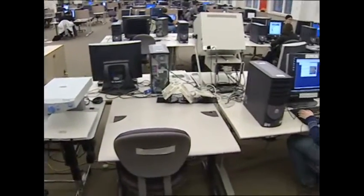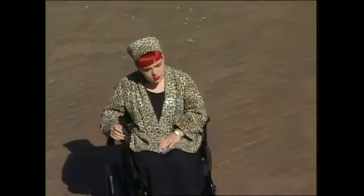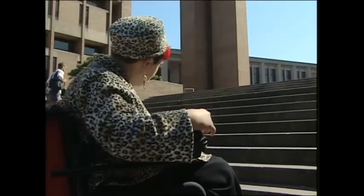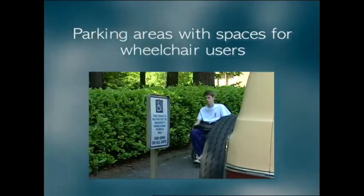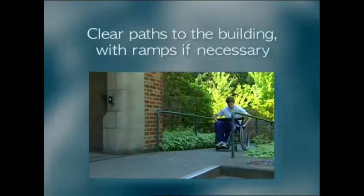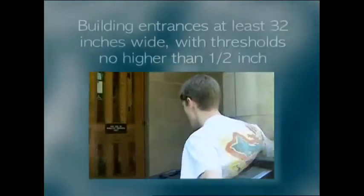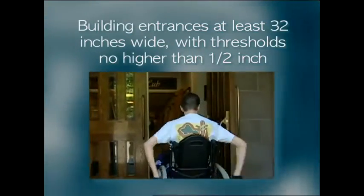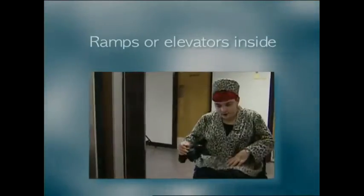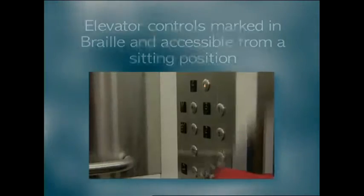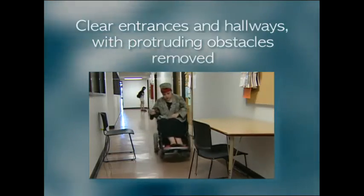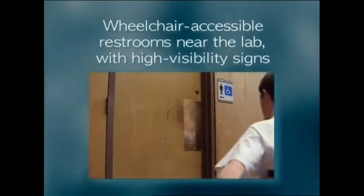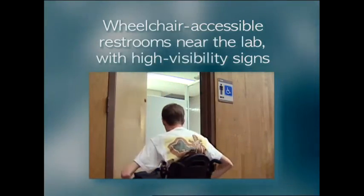By planning ahead, you can make sure everyone has a positive experience in your lab. The first step is getting there — if they can't find the lab, they can't use the lab. Eliminate those external barriers. Consider: parking areas with spaces for wheelchair users; clear paths to the building with ramps if necessary; building entrances at least 32 inches wide with thresholds no higher than one-half inch; ramps or elevators inside; elevator controls marked in braille and accessible from a sitting position; clear entrances and hallways with protruding obstacles removed; and wheelchair accessible restrooms near the lab with high visibility signs.